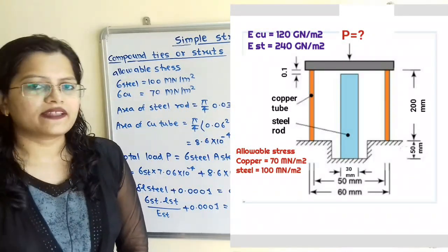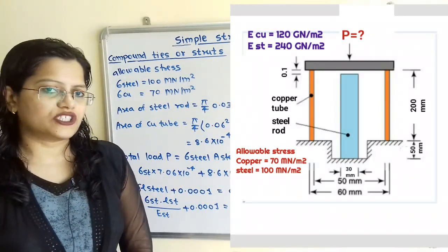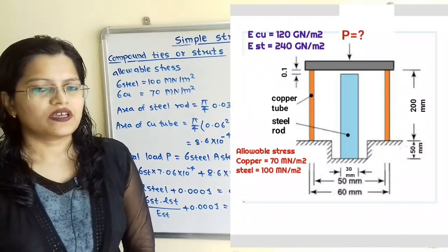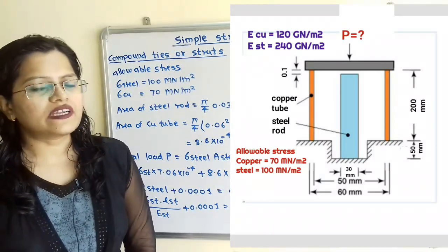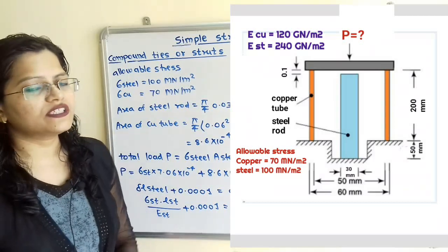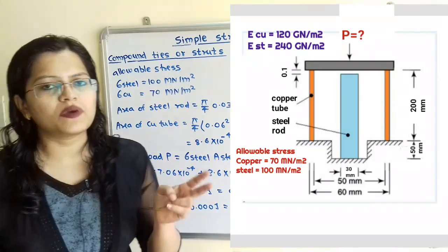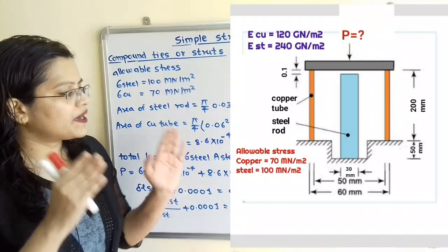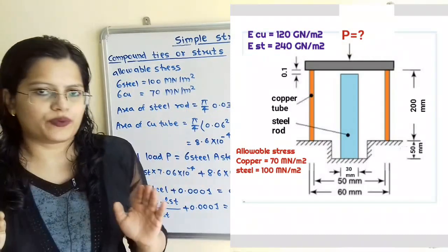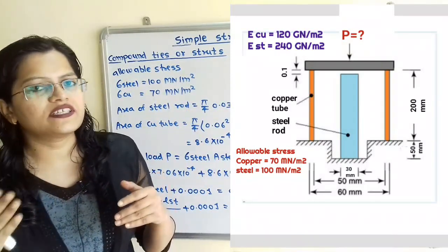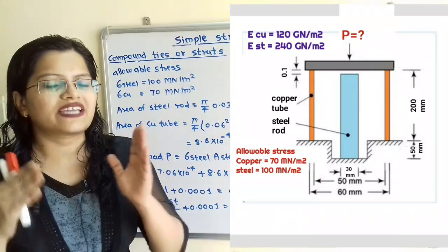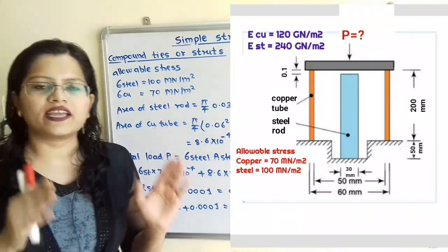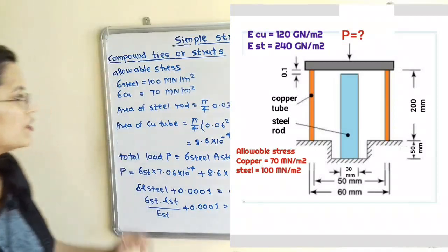Now we will apply the two conditions for compound ties or struts. Taking condition 1, the total load P is shared by two materials: P is equal to P_steel plus P_copper.